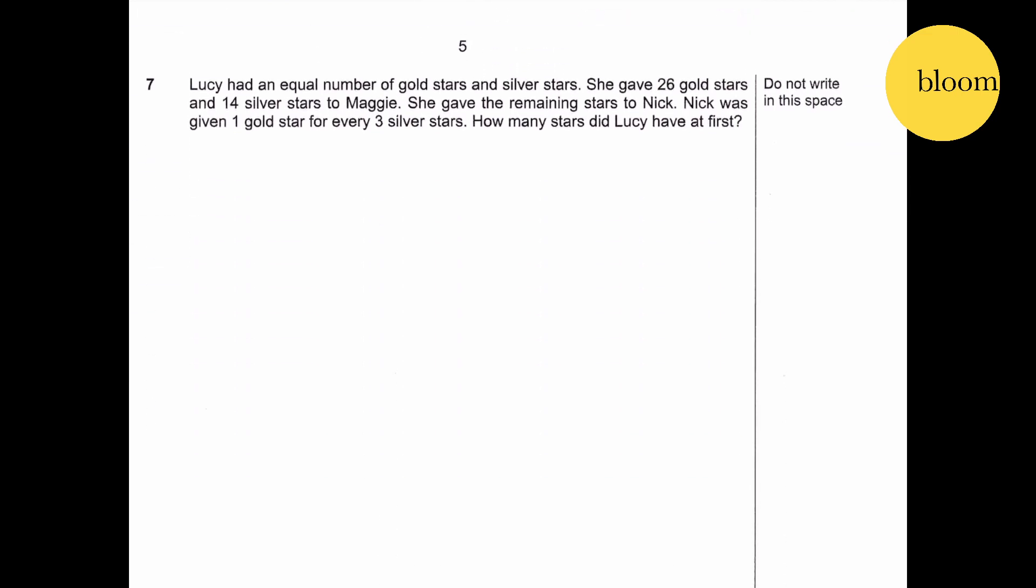Question number 7. Lucy had an equal number of gold stars and silver stars. She gives 26 gold stars and 14 silver stars to Maggie. She gave the remaining stars to Nick. Nick was given 1 gold for every 3 silver. How many stars did Lucy have at first?